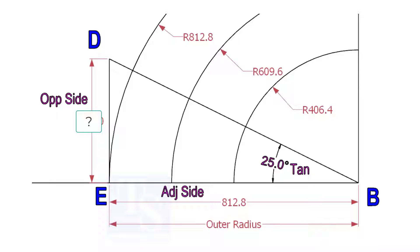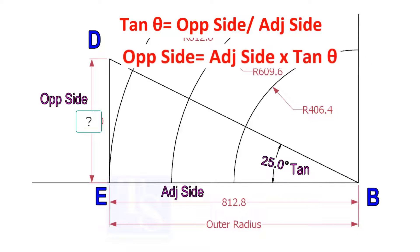To draw the line DB, we need to know the length of the line ED. To calculate ED, we need to apply the formula: tan theta equals opposite side divided by adjacent side. Opposite side equals adjacent side multiplied by tan theta.